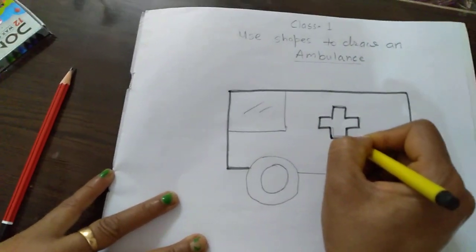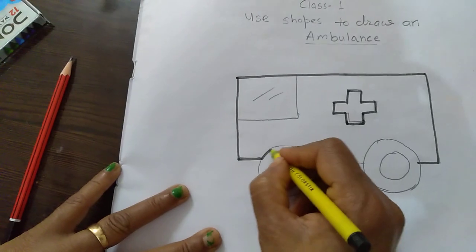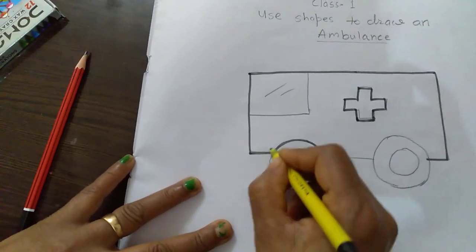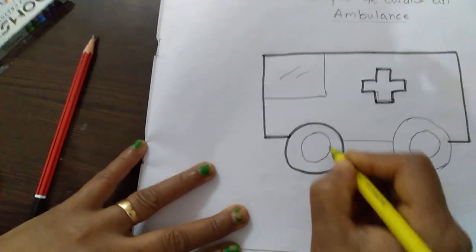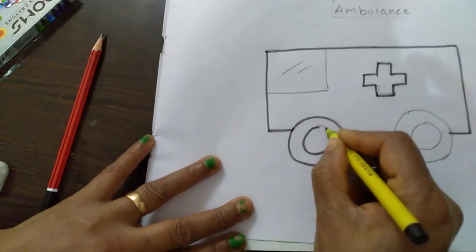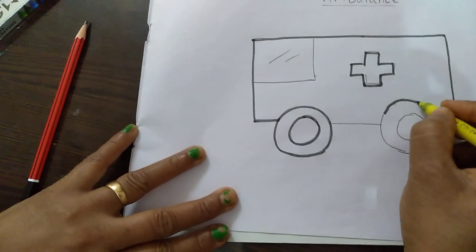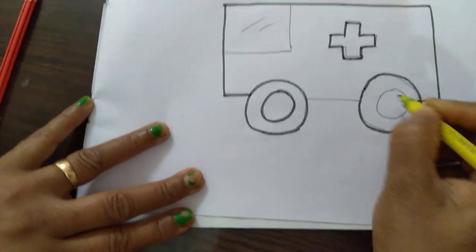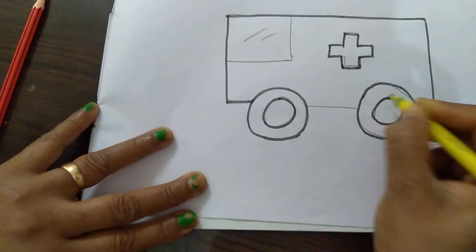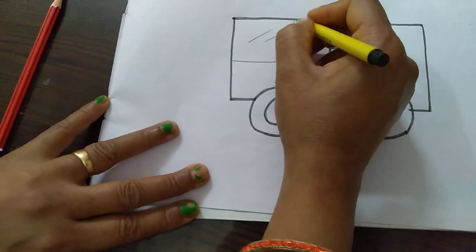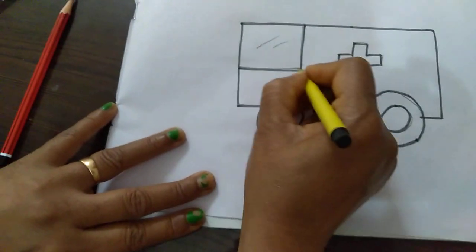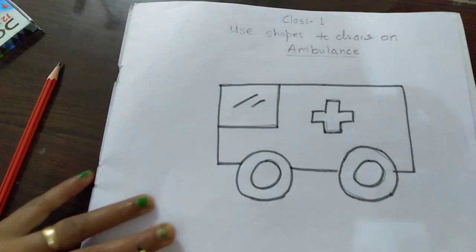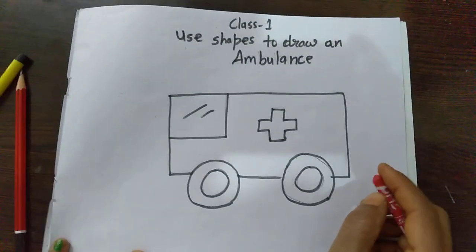Plus fill in red color. Wheel fill in black color. Middle circle fill in any color. Yellow, brown, no choice. Front glass. Okay student, let's color.